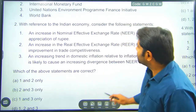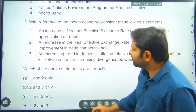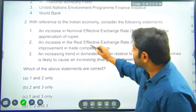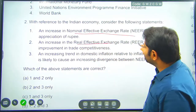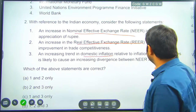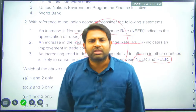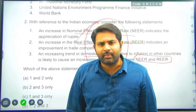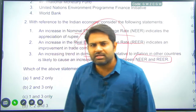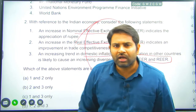With reference to the Indian economy, consider the following statements. The increase in nominal effective exchange rate (NEER) — the question talks about exchange rate, valuation of the currency, NEER and REER, an increase in trend of domestic inflation relative to other countries likely causing divergence between NEER and REER. The focus is on exchange systems in the external sector — how is Indian currency standing against other currencies? Current account deficit and its relationship with currency exchange systems.